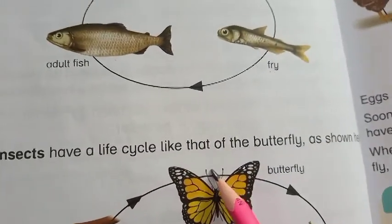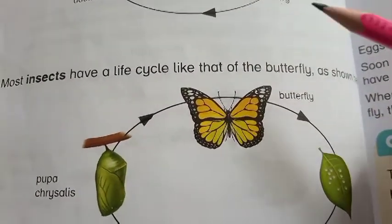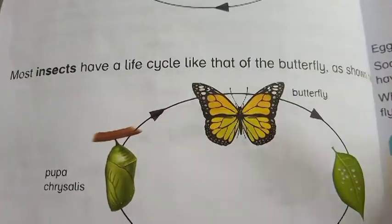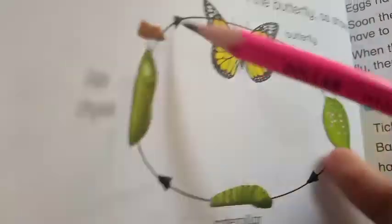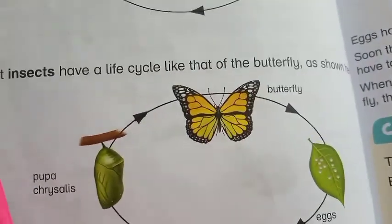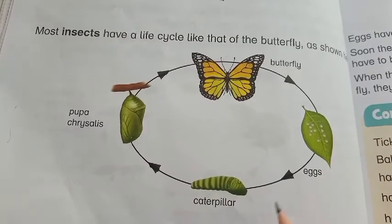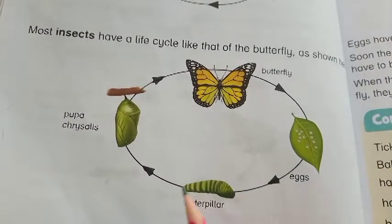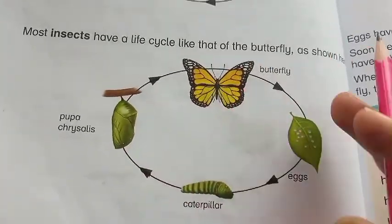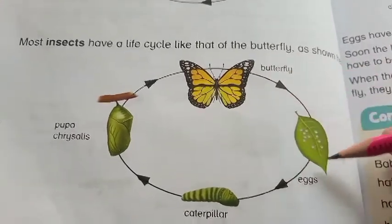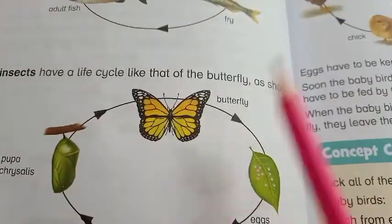Most insects have a life cycle like that of the butterfly. First, we have a butterfly. After the butterfly comes butterfly eggs. After the eggs comes the caterpillar. The caterpillar is then converted into a pupa. And then the pupa is converted into a butterfly again.